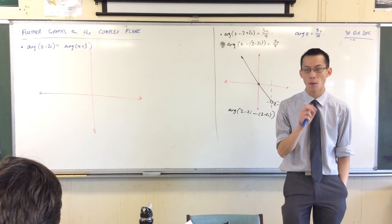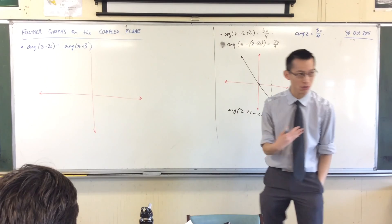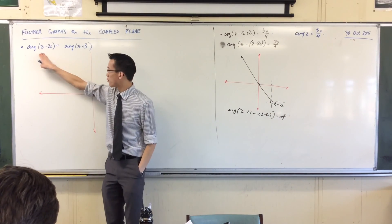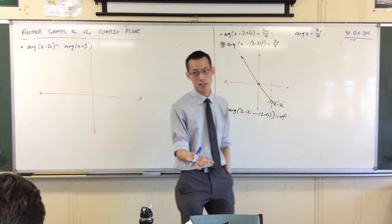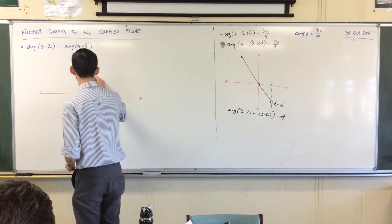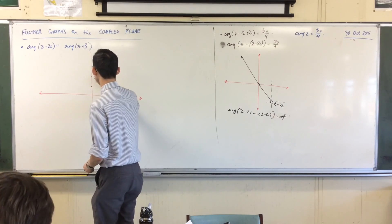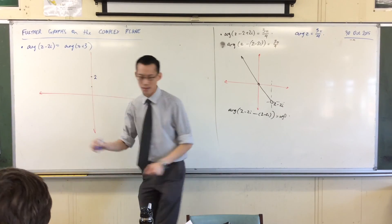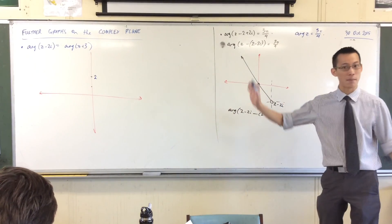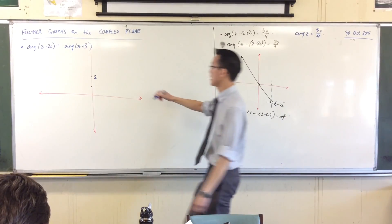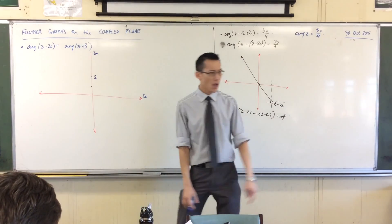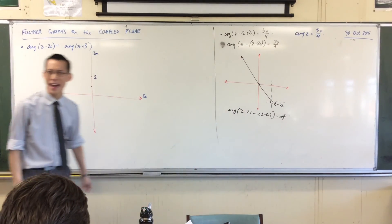Where are we measuring from, or measuring to? For this one, my point of reference is going to be - we looked at this one just before - 2i. Let's just mark it in: 1, 2. As I've said before, these are all on the axes, so I'm just going to mark it in as 2i because it's on the imaginary axis. Where's our other point of reference? Where's our other bag?